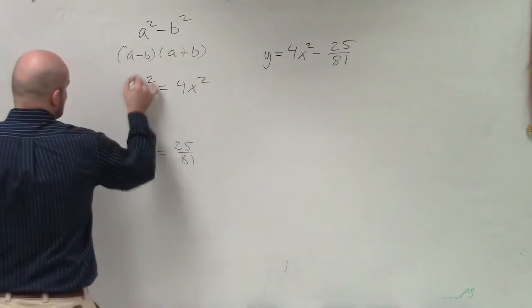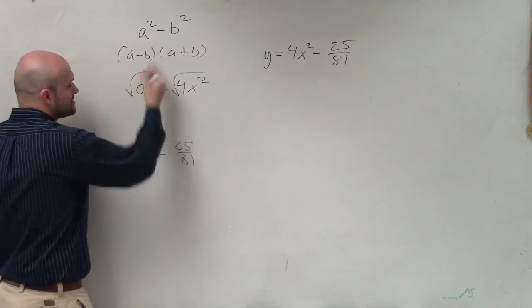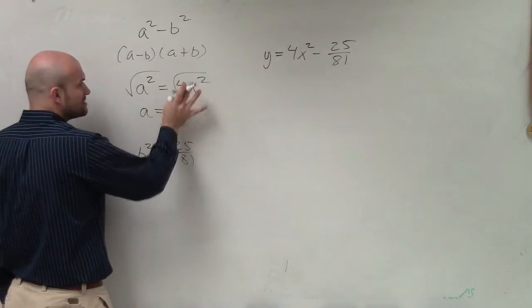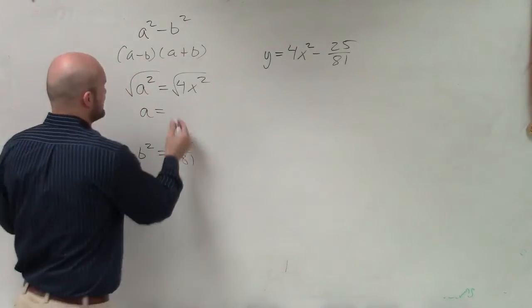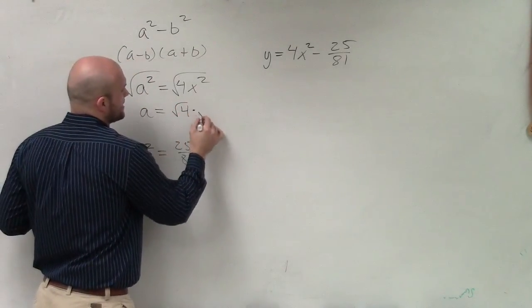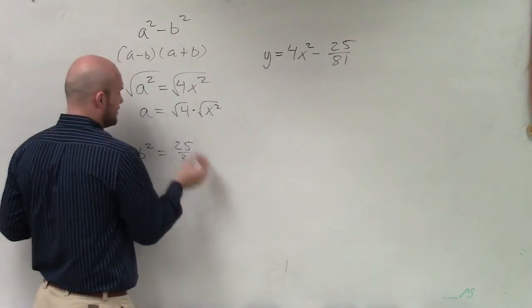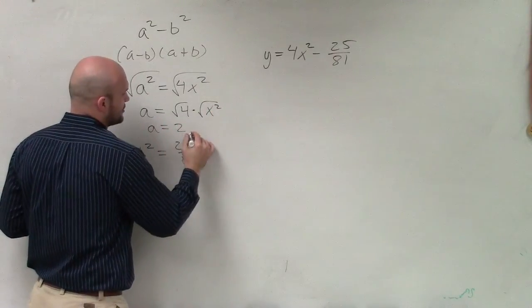So to do that, since that's a squared, I need to find out what a is. So I'll take the square root and a equals. Now remember, when you're taking the square root of the product of two numbers, that's the same thing as the square root of 4 times the square root of x squared. So therefore, a equals 2x.